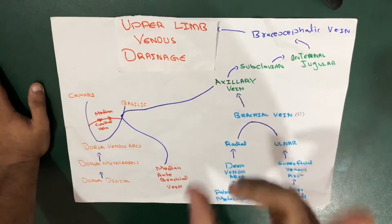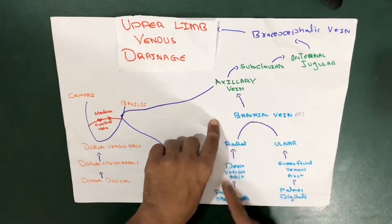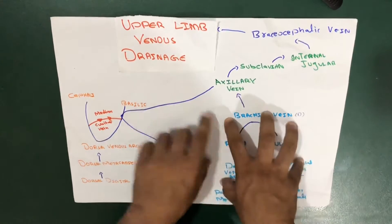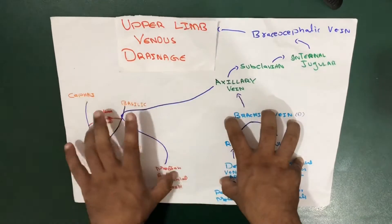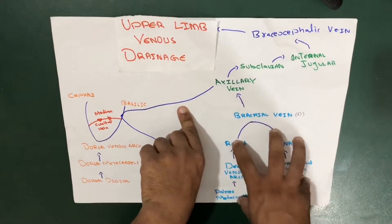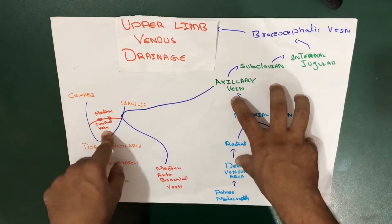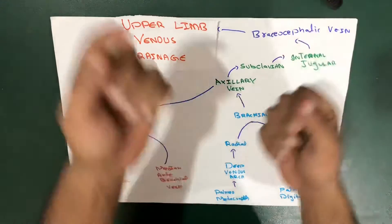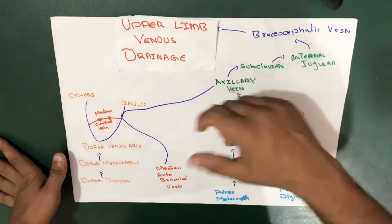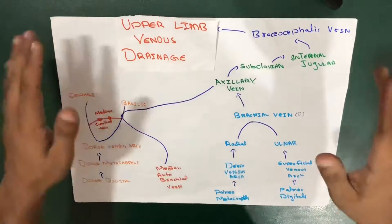We have divided the upper limb venous drainage into two portions. From this portion till the brachial artery, these are the deep veins, and these are the superficial veins. The superficial veins in the upper limb are more important compared to the deep veins, because the median cubital vein is used for venipuncture — for injections at the cubital fossa.